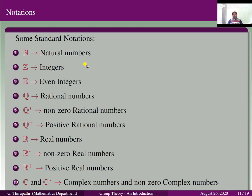There are some notations we use in our lessons. Capital N is the set of natural numbers {1, 2, 3, 4, ...}. Capital Z is the set of all integers {..., -3, -2, -1, 0, 1, 2, 3, ...}. Capital E denotes even integers, capital Q denotes rational numbers, Q* denotes non-zero rational numbers, Q+ denotes positive rational numbers, and so on.